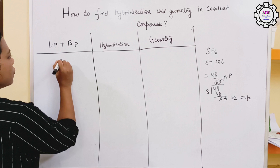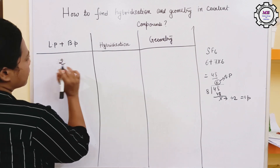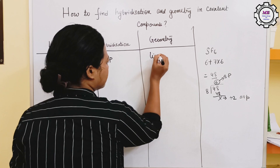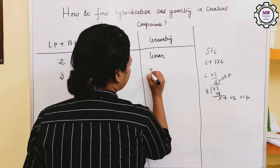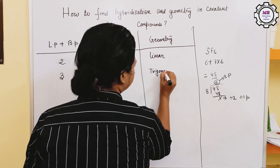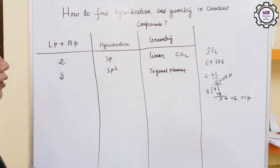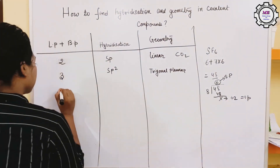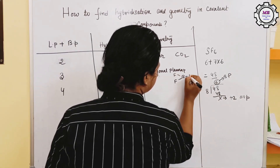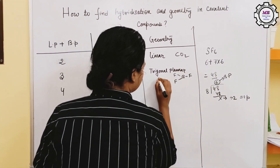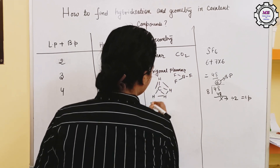If LP plus BP equals 2, hybridization is SP and geometry is linear. If LP plus BP equals 3, hybridization is SP2 and geometry is trigonal planar — for example, CO2 has a linear structure. If LP plus BP equals 4, hybridization is SP3 and geometry is trigonal planar — for example, BF3.